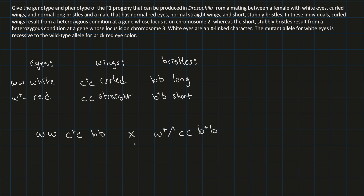Now we just need to cross all three traits. Curled wings is on chromosome 2, bristles are on chromosome 3, and eyes are on the X chromosome — all different chromosomes. This means they segregate independently, so we can do a Punnett square for each characteristic separately and then multiply the probabilities, because they're independent events.